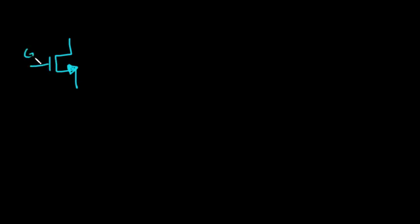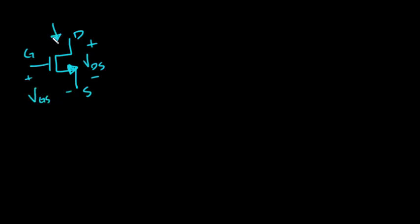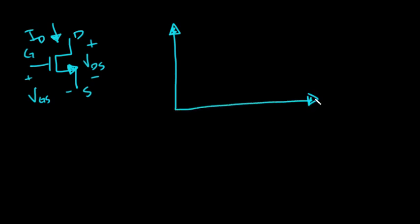So let's try it. Here's our MOS device — we're going to do an NMOS device today. We've got our gate, drain, and source. The voltage between the drain and the source is VDS, the voltage between the gate and the source is VGS, and what we really care to know is the drain current ID as we vary these voltages at the terminals. We're going to plot it and look at it. Starting with ID versus VDS.